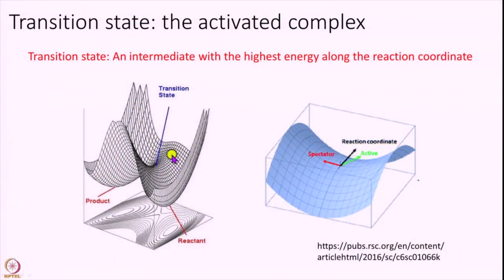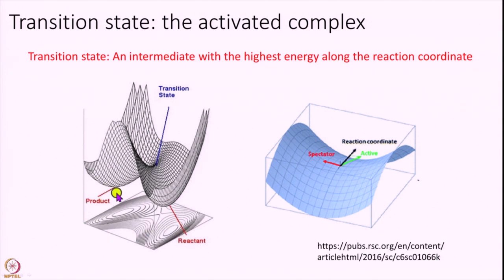Let us look at this in terms of a figure. I have drawn the same thing as my model in terms of a 3D figure. The idea is you have a reactant basin — a minima well. You can see it in the contour plot here: this is my reactant, the product is another basin here, and in between lives the transition state right here. First the energy has to increase to reach the transition state, and then the energy goes down to become product. And this transition state is again not the minimum energy structure overall.